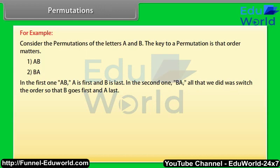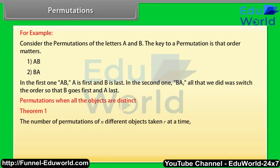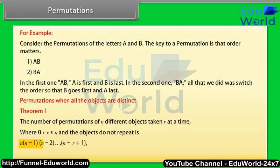Permutations when all the objects are distinct — Theorem 1. The number of permutations of N different objects taken R at a time, where 0 < R ≤ N and the objects do not repeat, is N × (N−1) × (N−2) × … × (N−R+1), which is denoted by NPR.